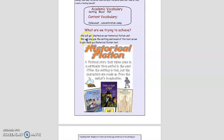What we're trying to achieve in this lesson is to get started on our historical fiction unit. We are going to analyze the setting and the mood of the text as we begin reading. A historical fiction text is a fictional story that takes place in a particular time period in the past — a real time period in history. Often the setting is real, but the characters are made up from the author's imagination using clues and real facts from history.